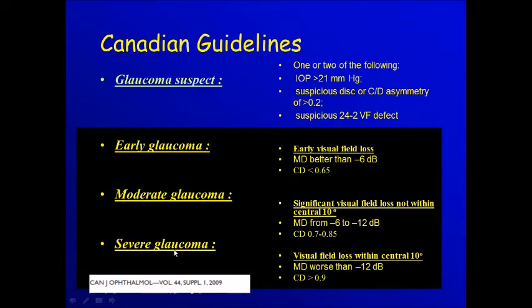Then they defined severe glaucoma as visual affection in the field within the central 10 degrees, or mean deviation more than 12, and a cup-disc ratio higher than 0.9.